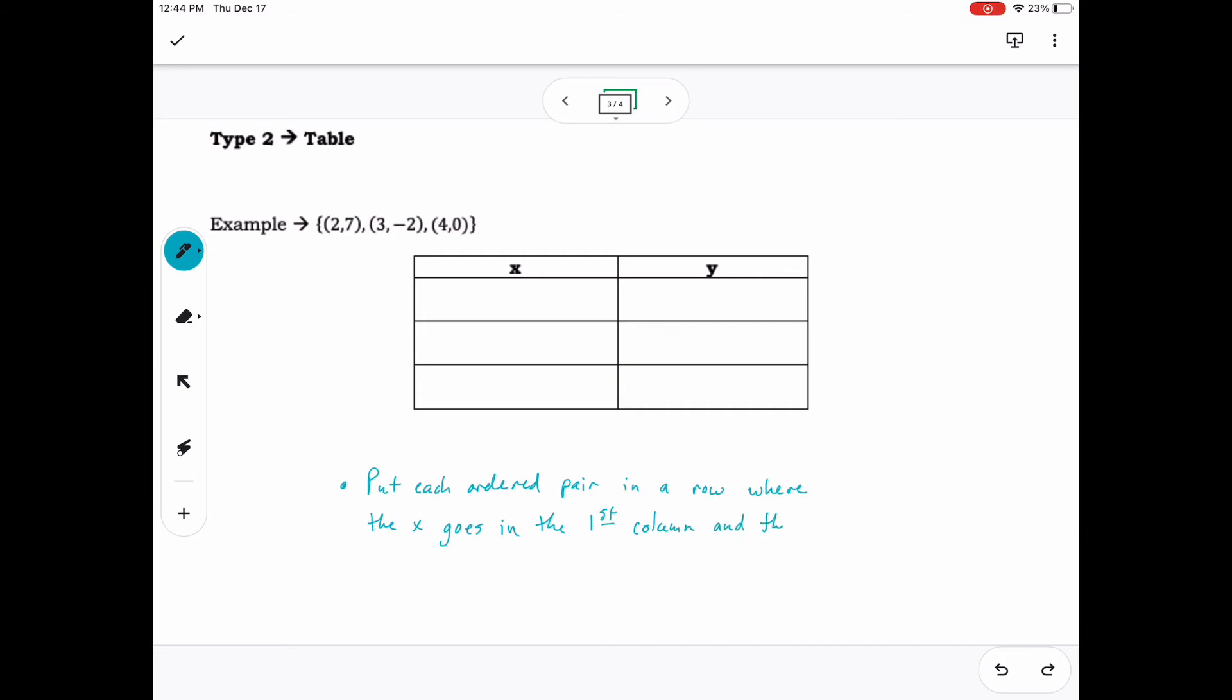Put each ordered pair in a row where the x goes in the first column and the y goes in the second column. So for this example, 2 would go across from 7, 3 from negative 2, and 4 to 0.